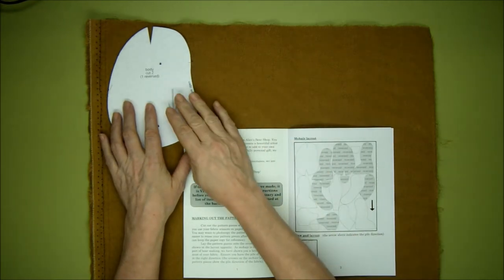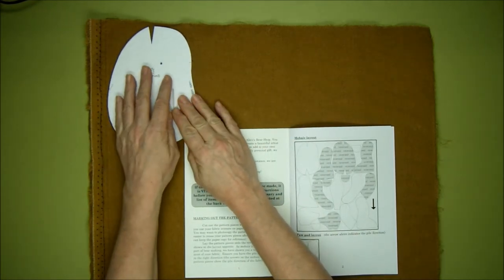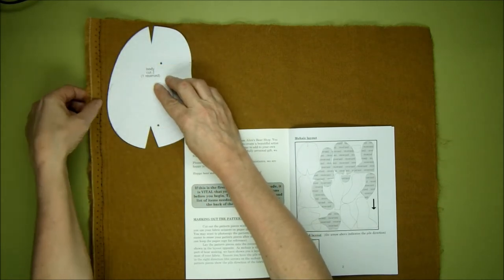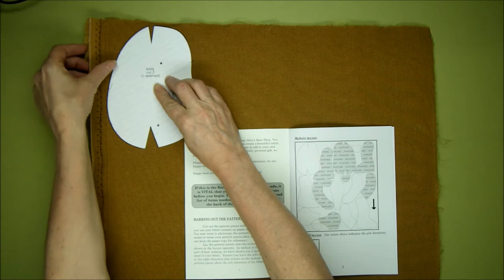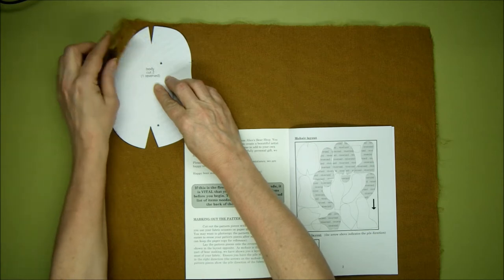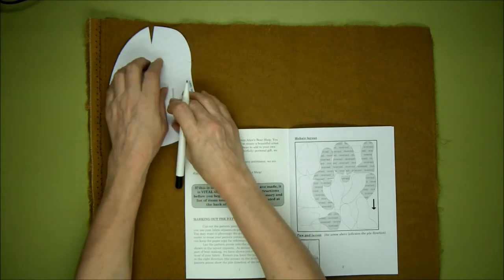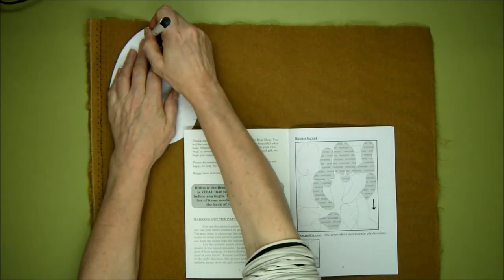This is the body. You're going to fit it as close as you can to the edge, but I've deliberately left on the selvage edge here, which is the part of the mohair that's attached to the loom and doesn't have any pile on it.